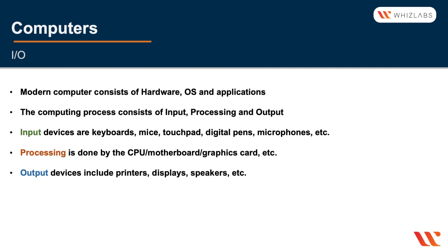A modern computer consists of hardware, an operating system, and applications. The computing process itself consists of input, processing, and output. Input is done through input devices, processing is done by the CPU, and output is provided by output devices. Typical input devices are keyboards, mice, touchpads, digital pens, and microphones. Output devices include printers, monitors, and speakers.